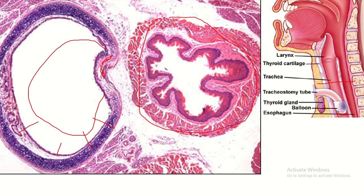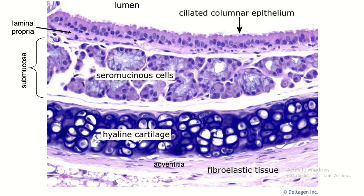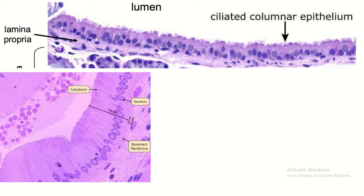Just behind the trachealis muscle, the esophagus is situated, so food material easily passes through the esophagus. The mucosa consists of the lining epithelium and lamina propria. The submucosa contains seromucous glands. This is the hyaline cartilage and this is the adventitia — adventitia means collagenous connective tissue.